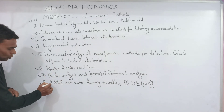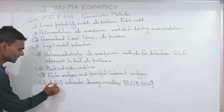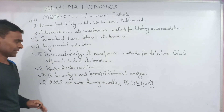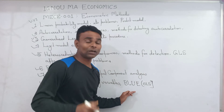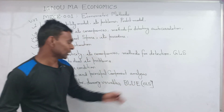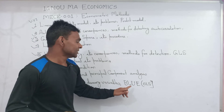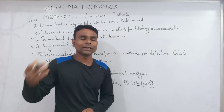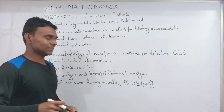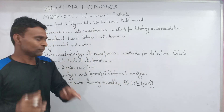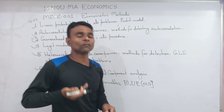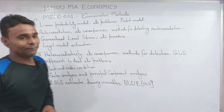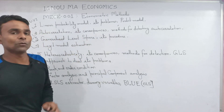Next is 2SLS — Two-Stage Least Squares estimator. Also, the concept of BLUE: what do you understand by BLUE, that is, Best Linear Unbiased Estimator? Prove that OLS — Ordinary Least Squares — is BLUE. So these are the major and important topics for this course, MECE001 Econometric Methods.